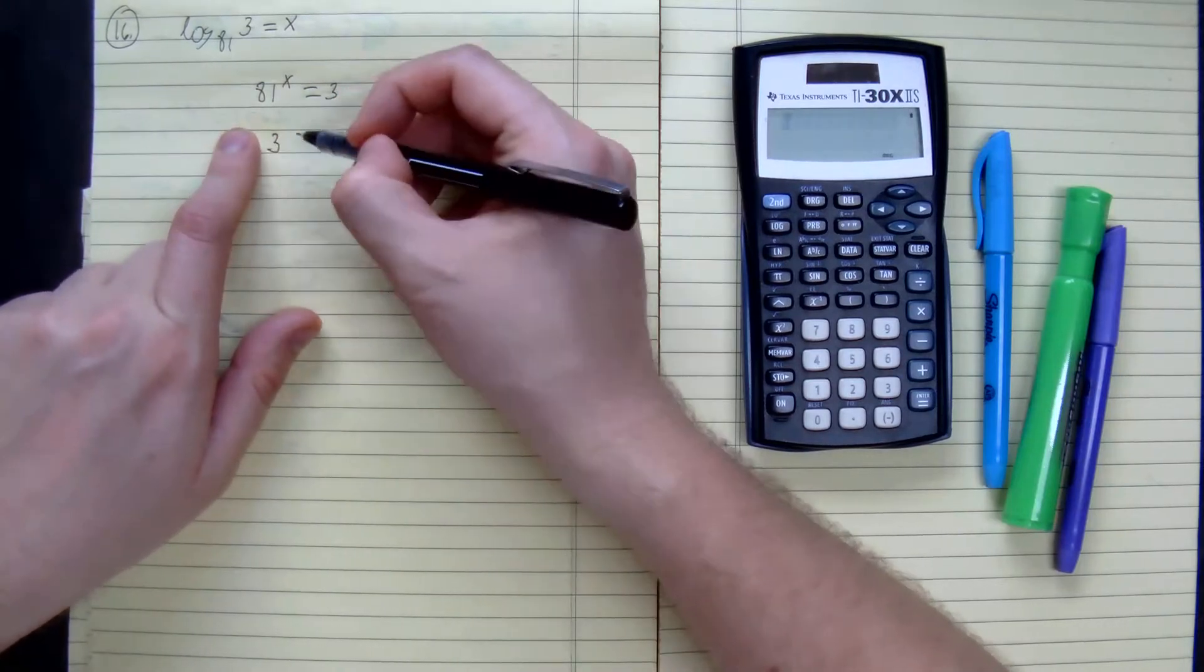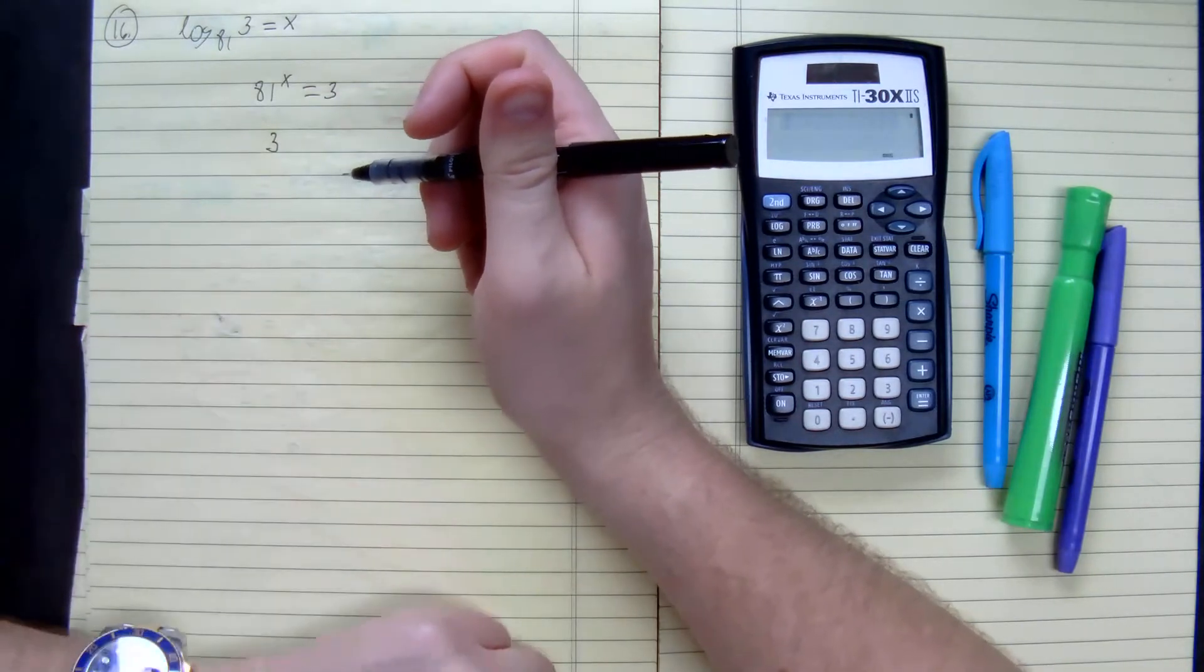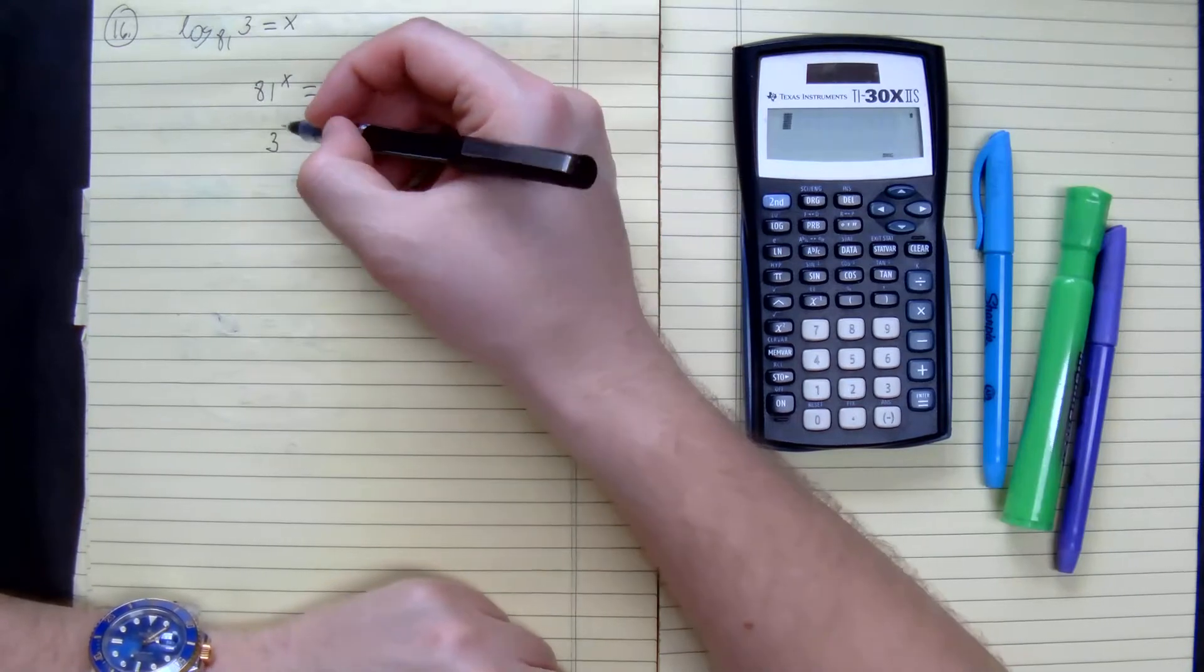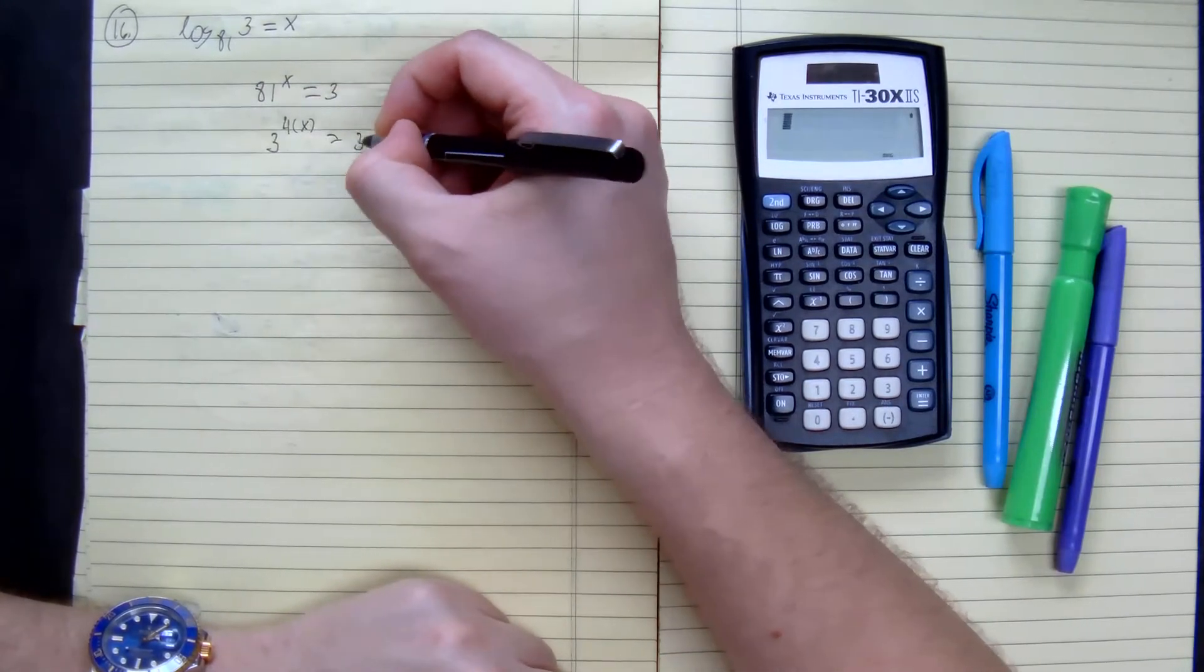So we can convert this to 3 to the power of 4 times the quantity of x equals 3 to the power of 1.